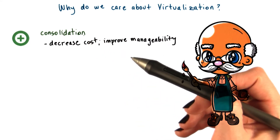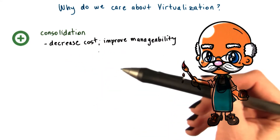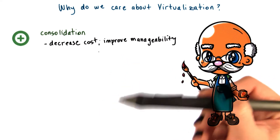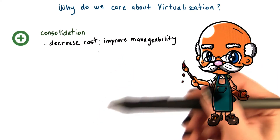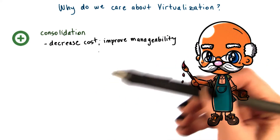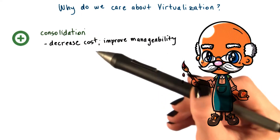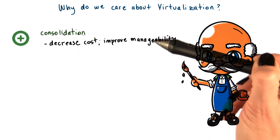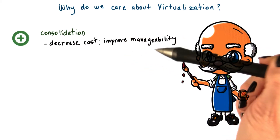Consolidation then leads to improved cost efficiency. With fewer machines, with less space, potentially with fewer admins, and with fewer electrical bills, we'll be able to run the same kind of workload. So consolidation delivers benefits because it allows us to decrease cost and also to improve the manageability of the system.